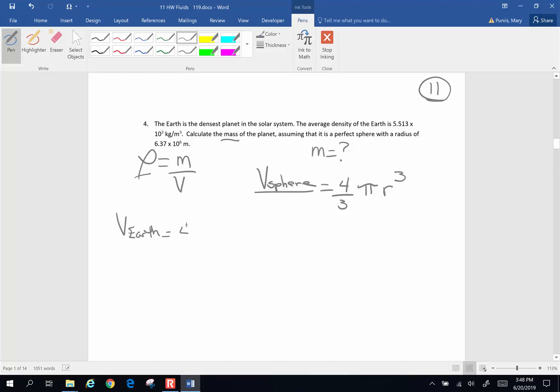So the volume of planet Earth is going to be 4 thirds times pi times that radius 6.37 times 10 to the sixth meters, that's just about 4,000 miles, pretty darn big. And we're going to cube that number. So I'm going to grab my calculator, 6.37 times 10 to the third, and I am going to raise this to the third power times pi times 4 divided by 3. That's not what I got earlier. I'm going to redo my math.